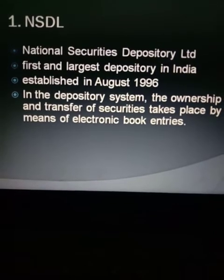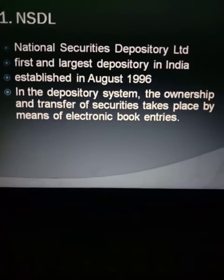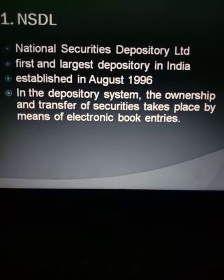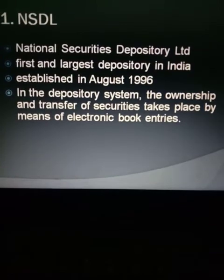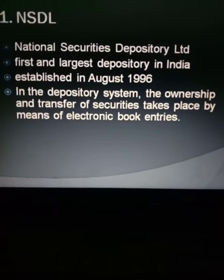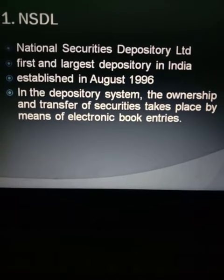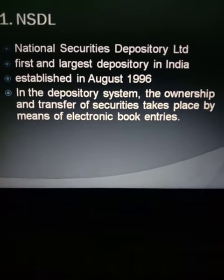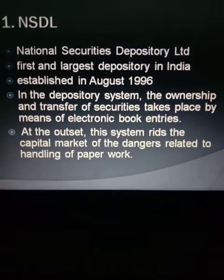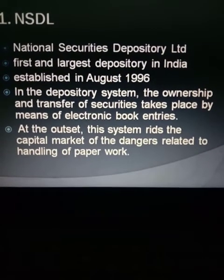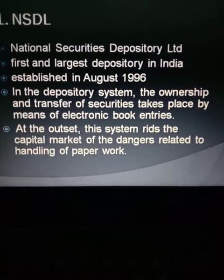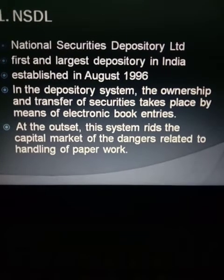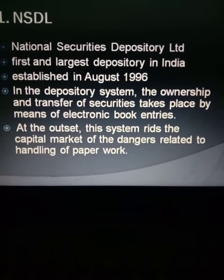In the depository system, the ownership and transfer of securities takes place by means of electronic book entries. Securities are transferred from seller to buyer through electronic form with the help of demat accounts. This system removes the capital market risks related to handling of paperwork, avoiding a lot of risk for sellers.